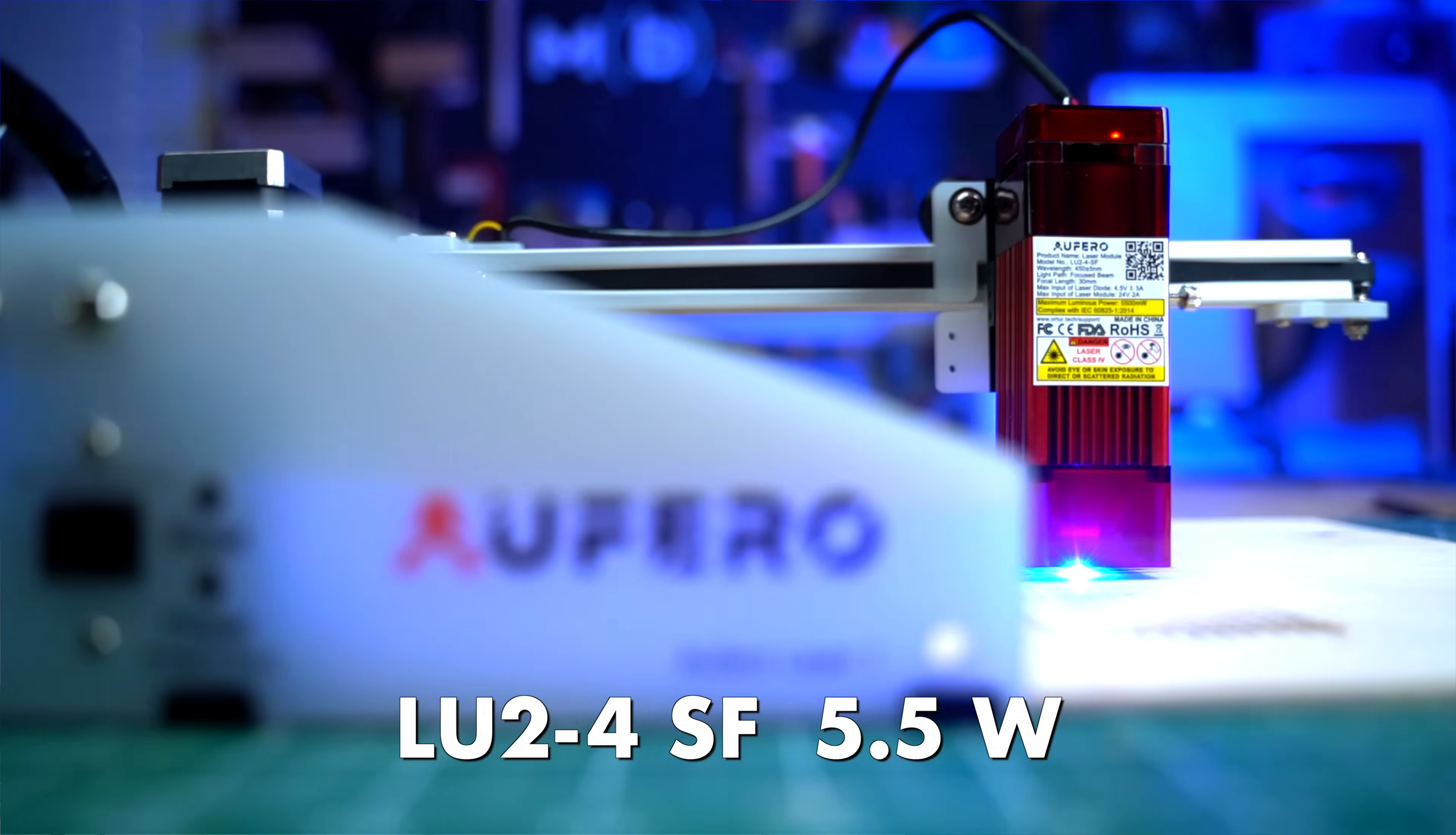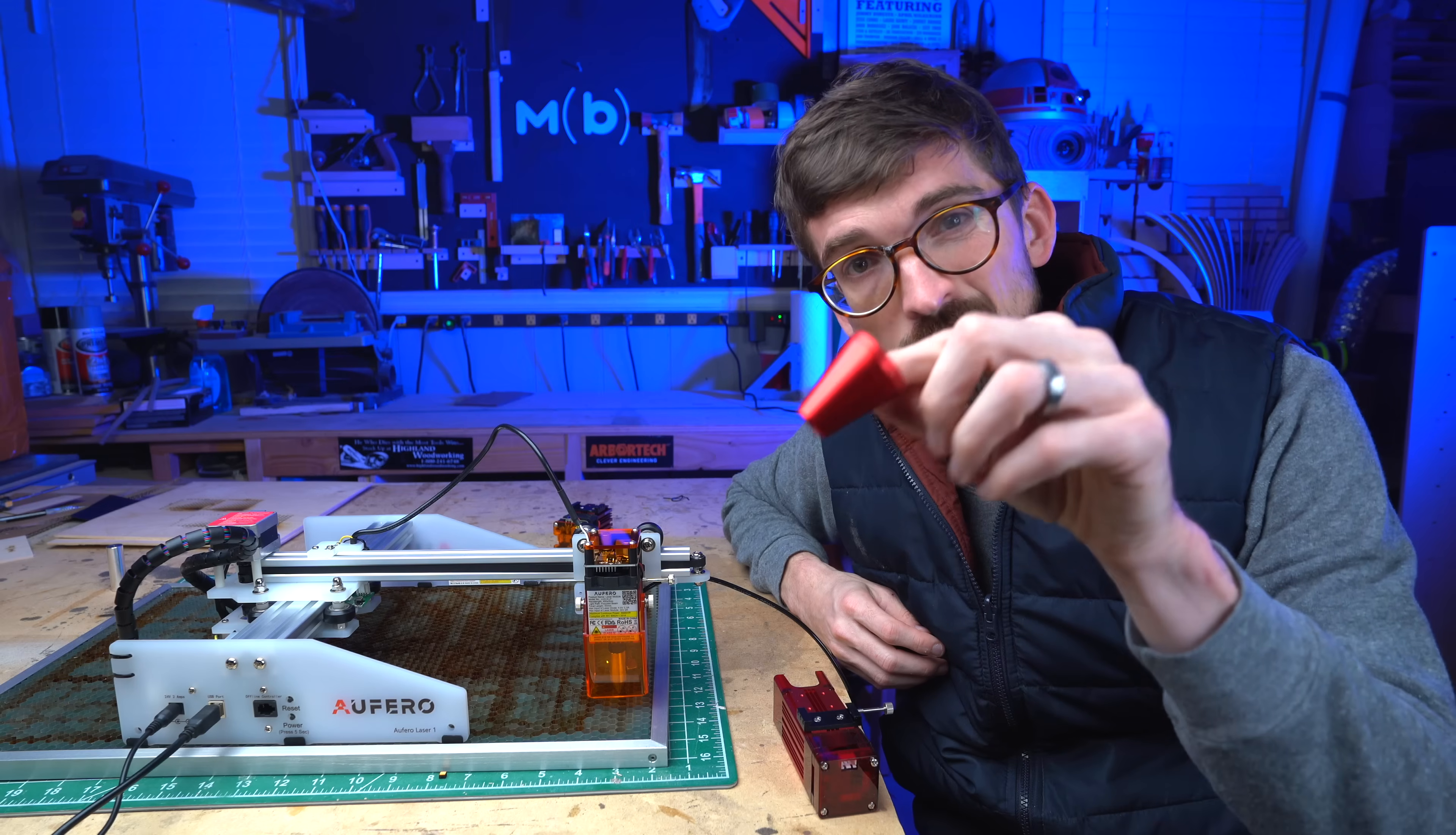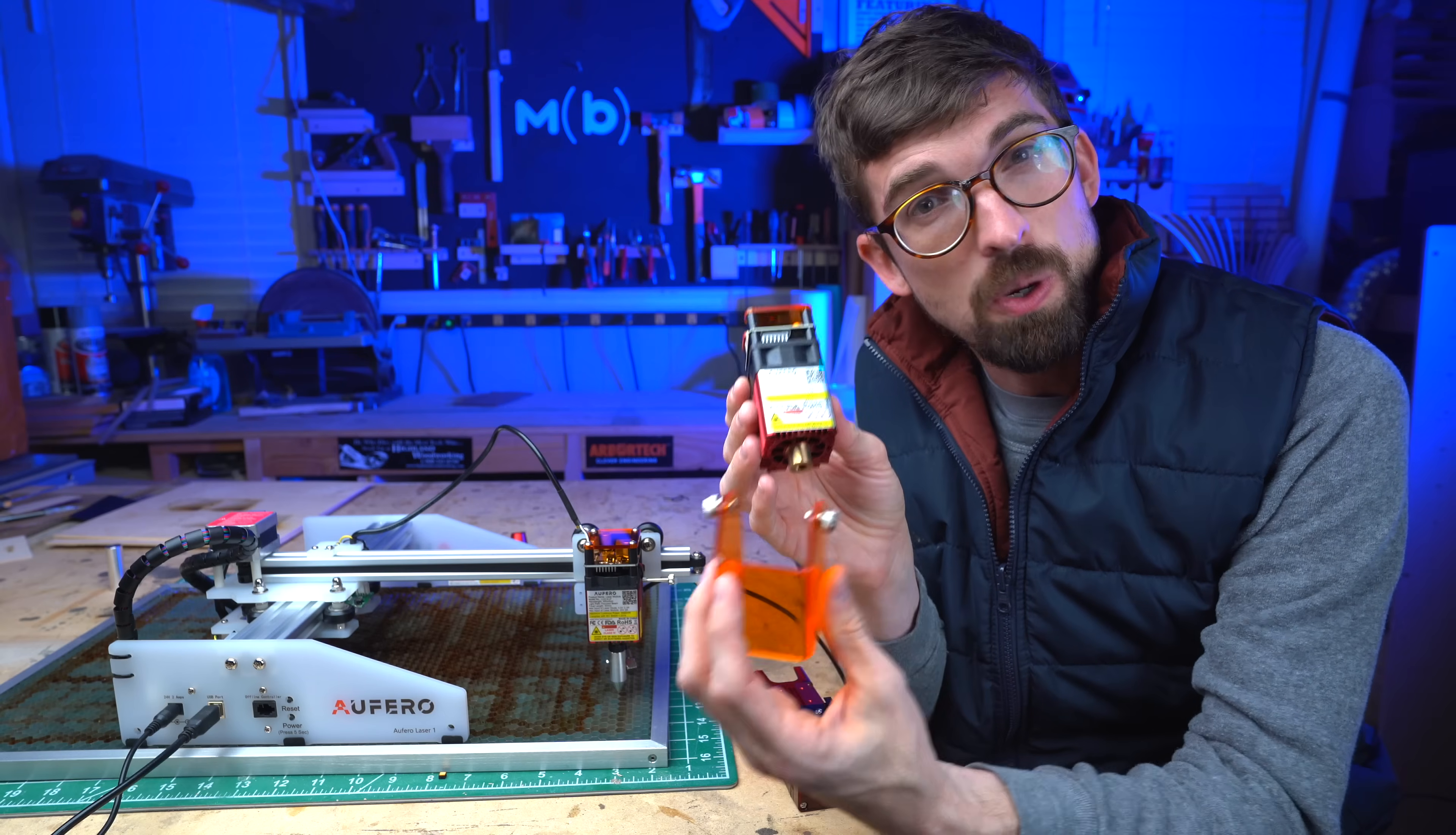This is a 0.07 by 0.06 millimeter laser dot and that is compared to the LU2-4. So the step up, and there's two different versions of it. You have the short focus, which is this guy, and the long focus, which is this guy. You might see pictures of the long focus with this nozzle attached to it, but we'll get into what this metal piece is here in a minute.